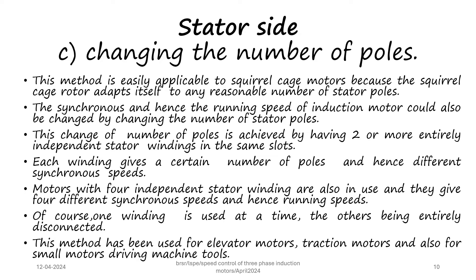The third method of speed control from the stator side is by changing the number of poles. This method is easily applicable to squirrel cage motors because the squirrel cage rotor adapts itself to any reasonable number of stator poles. The synchronous and hence the running speed can be changed by changing the number of stator poles. This is achieved by having two or more entirely independent stator windings in the same slots — each winding gives a different number of poles and hence different synchronous speeds. Motors with four different independent stator windings give four different synchronous speeds; one winding is used at a time. This method is used for elevator motors, traction motors, and small motors driving machine tools.